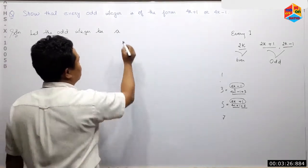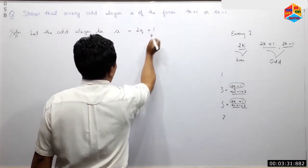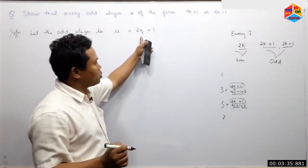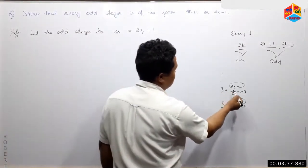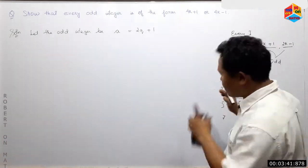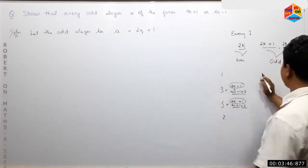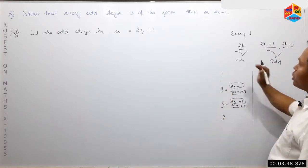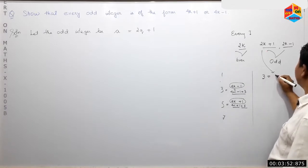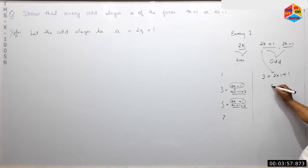Let a be equal to 2q plus 1. Let's see the first example: if we take the integer into the integer, the integer is equal to 3. It's equal to 3: 2 into 1 plus 1, that's equal to 3.